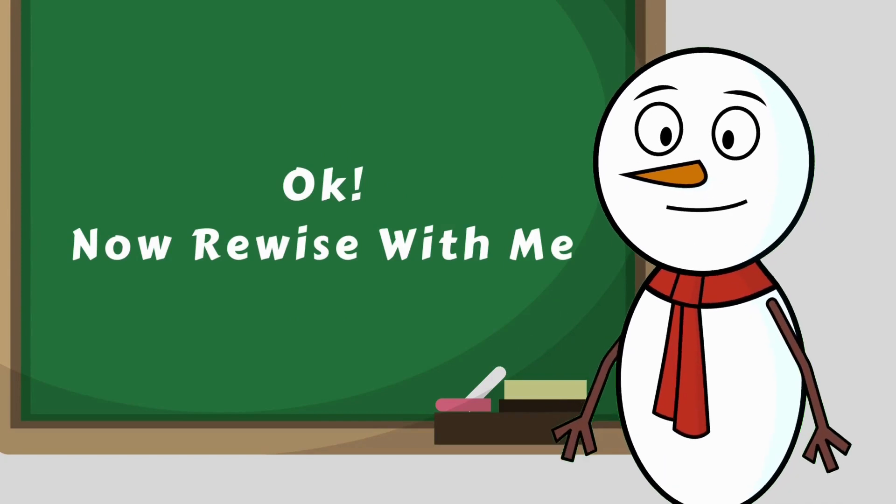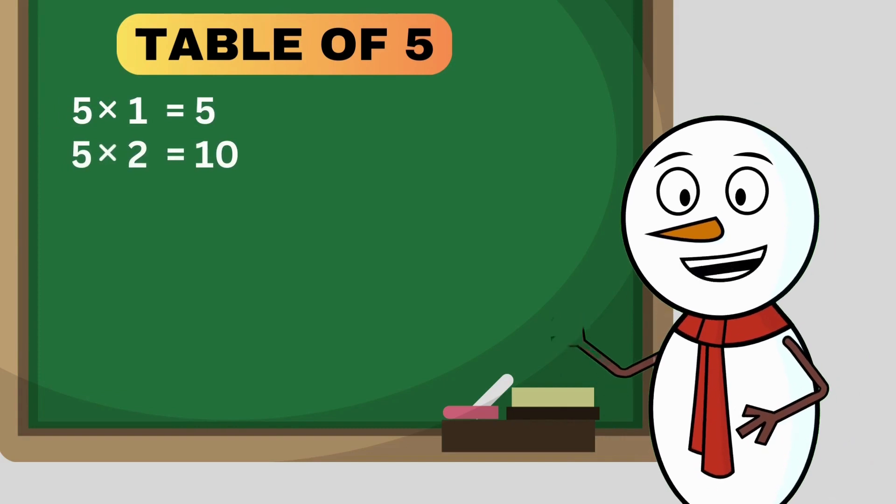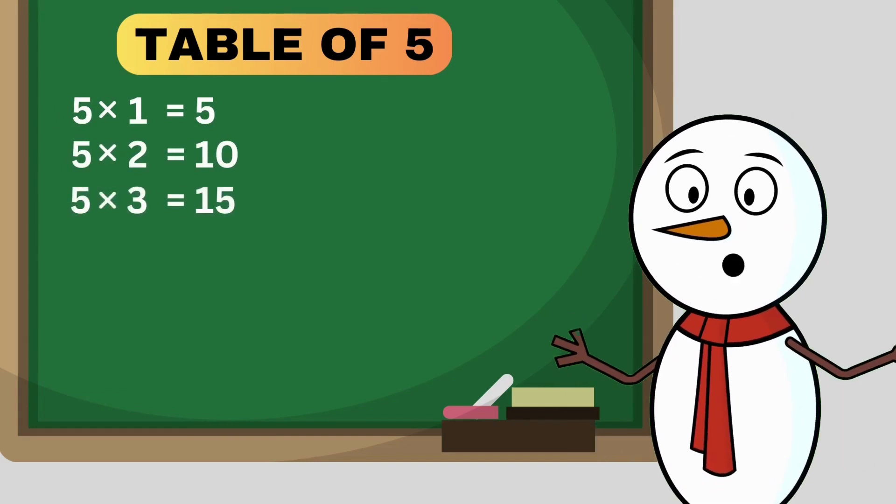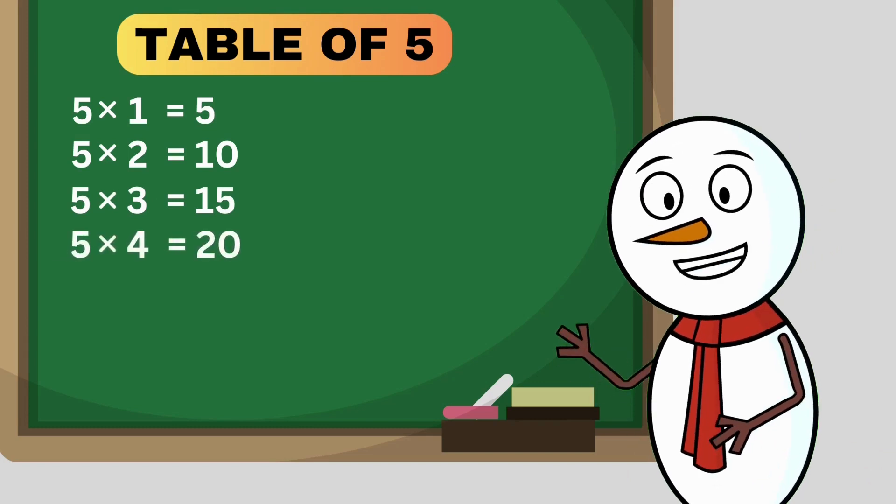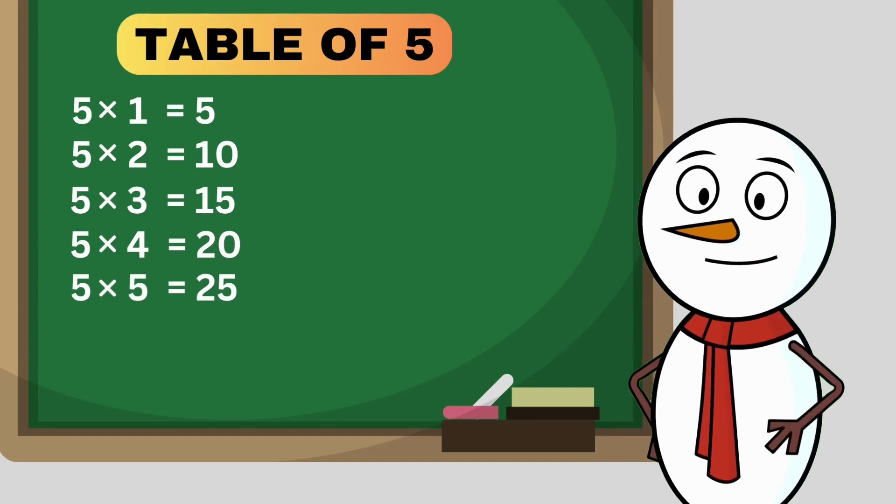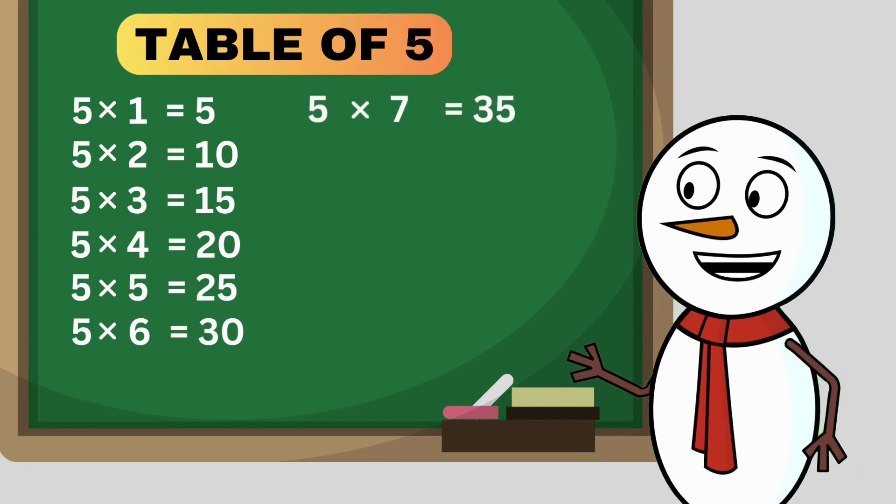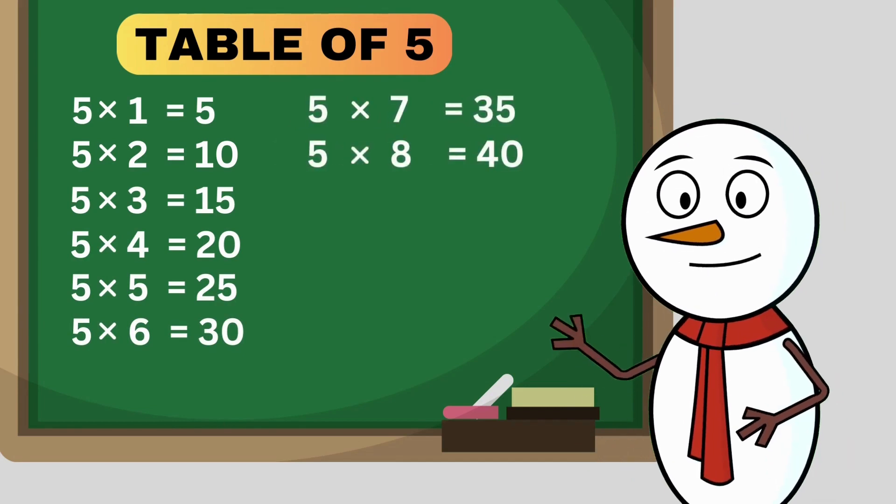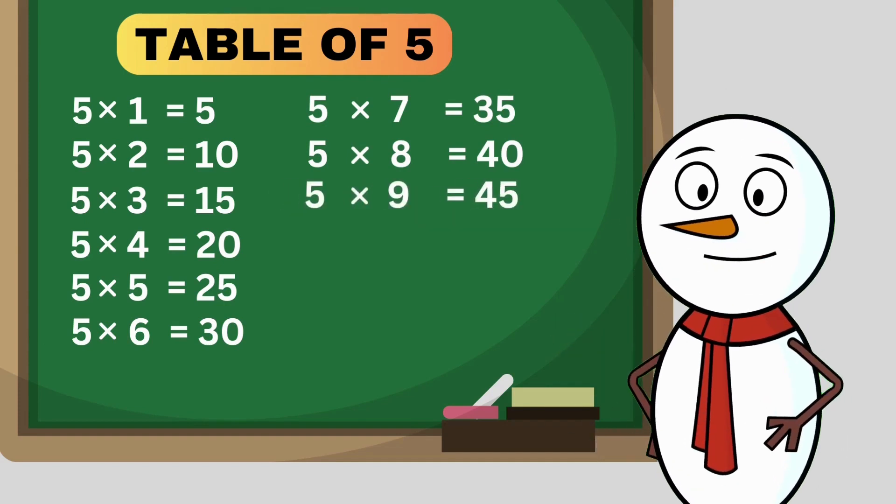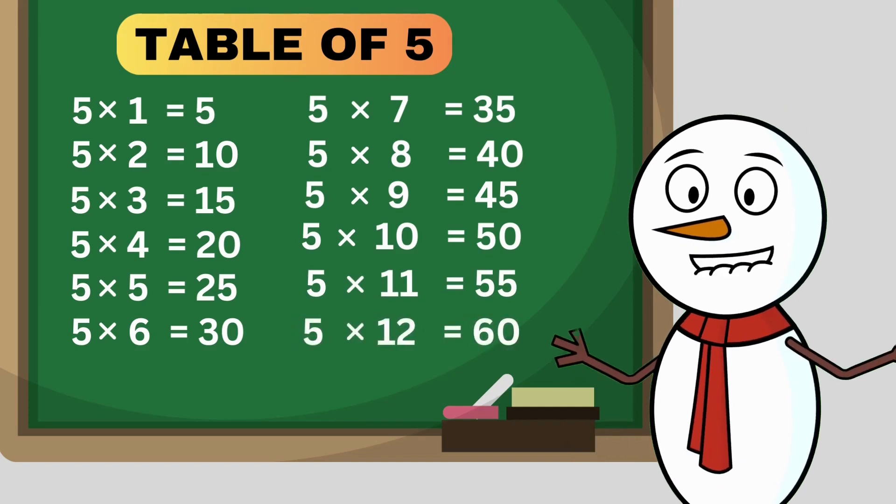Now revise with me. 5 times 1 is 5, 5 times 2 is 10, 5 times 3 is 15, 5 times 4 is 20, 5 times 5 is 25, 5 times 6 is 30, 5 times 7 is 35, 5 times 8 is 40, 5 times 9 is 45, 5 times 10 is 50, 5 times 11 is 55, 5 times 12 is 60.